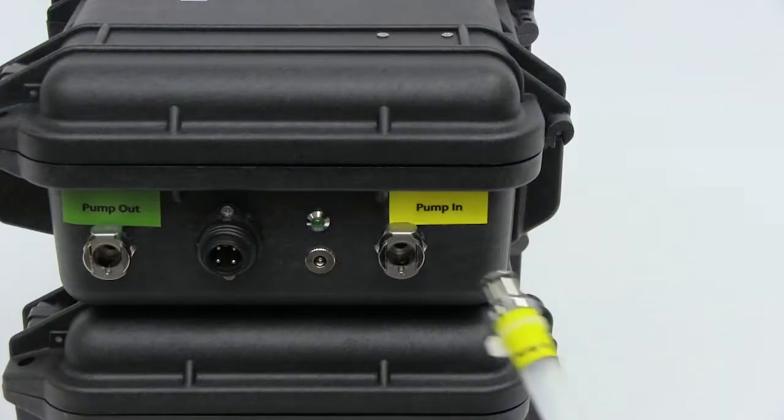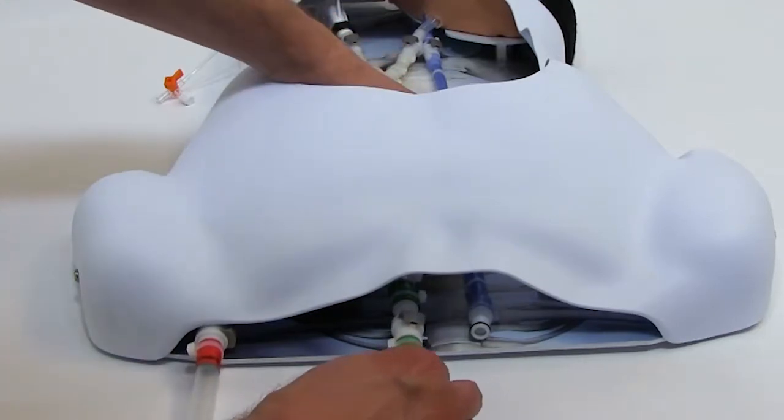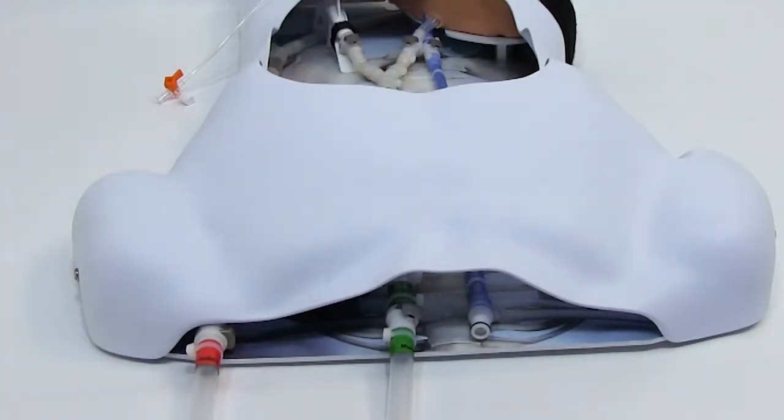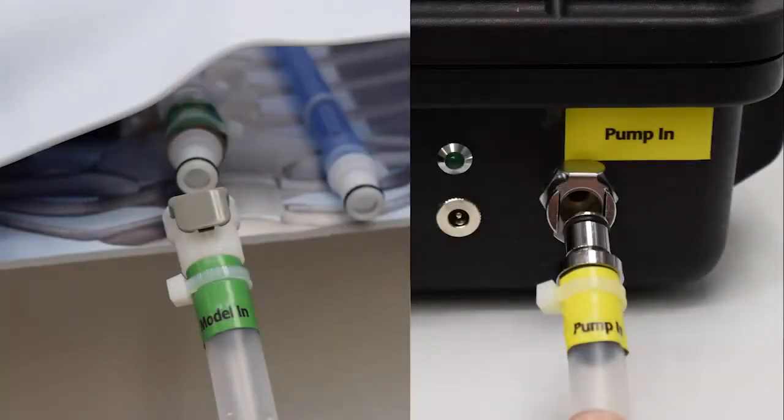Connect the tubing to the pump, sump, and body model. There are three tubes with red, green, and yellow labels. Connect the corresponding colors of plugs to their sockets, ensuring the metal plugs fit into metal sockets and plastic plugs fit into plastic sockets.